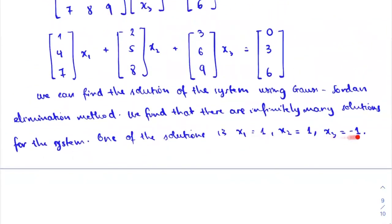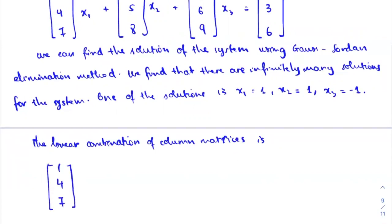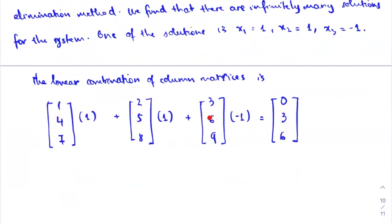I just want to quickly give the solution so I can talk about linear combinations. The linear combination of column matrices using X1=1, X2=1, X3=−1 is: [1; 4; 7]×1 + [2; 5; 8]×1 + [3; 6; 9]×(−1) = [0; 3; 6]. This is the linear combination of the column vectors of the coefficient matrix A. When you compute this linear combination, it equals the right-hand side of the system.